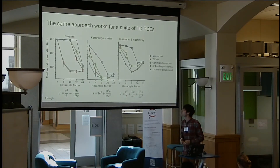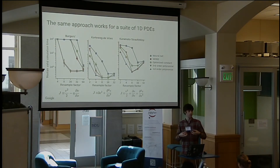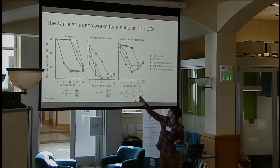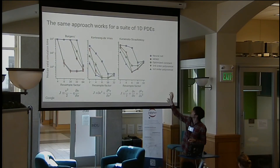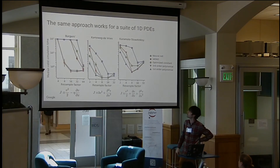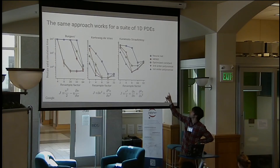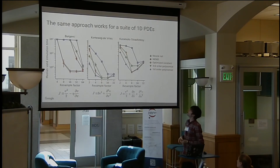We did this across a suite of different 1D PDEs — different toy versions of fluid dynamics: Burger's equation with shocks, Korteweg-DeVries with solitons, Kuramoto-Sivashinsky with chaotic dynamics like a flame. Across this suite of equations, the neural net consistently lets us get comparable accuracy on significantly coarser grids.